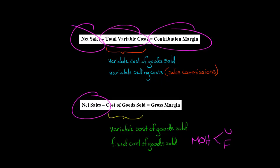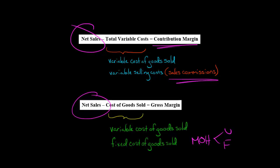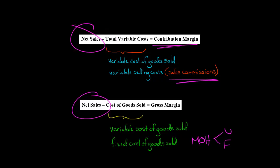You're just subtracting variable costs from net sales to get contribution margin. Another difference is that here we're subtracting all variable costs, not just variable costs that have to do with cost of goods sold. So, for example, variable selling costs such as sales commissions would be deducted from net sales in getting Apple's contribution margin, but you would not subtract sales commissions from net sales in order to get gross margin.